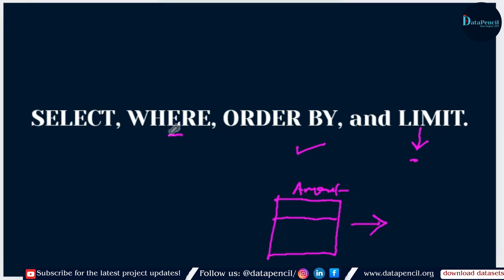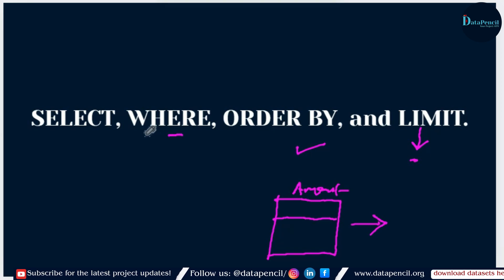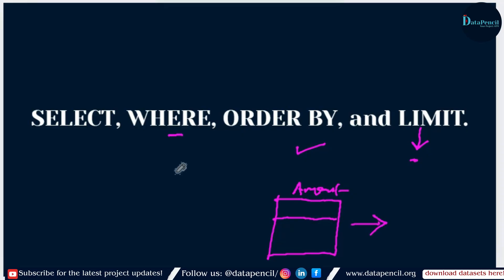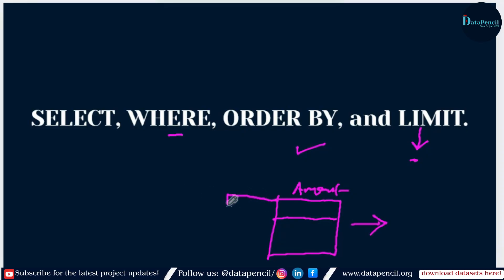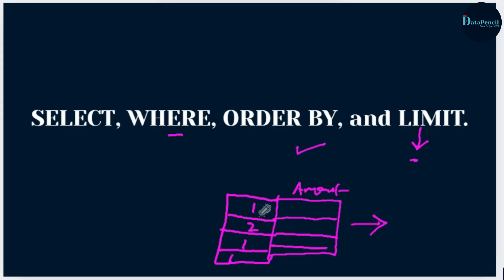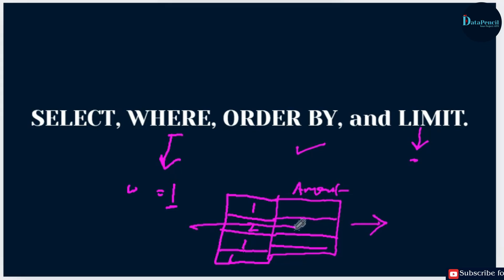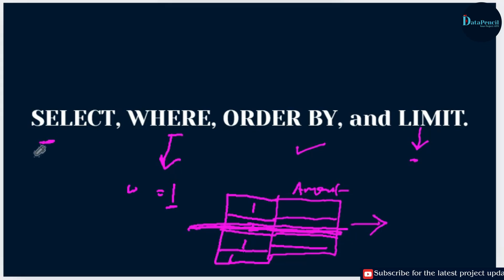Now WHERE — what does WHERE do? It basically filters rows. On what basis? Suppose you want to see rows for a specific thing. Let's assume the amount is for different companies — company one, company two. If we want to see the amount for company one only, we use this filter and write WHERE company equals one. In that case, the output will show only company one's data; the remaining data will not be shown.